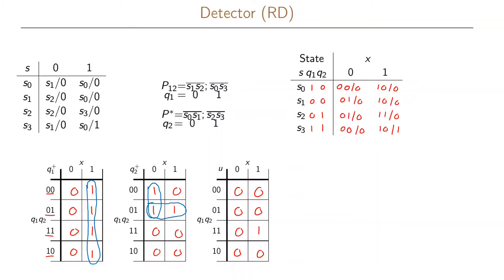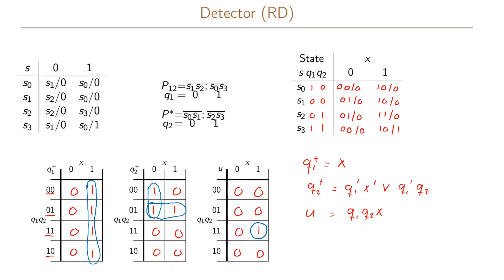For the output function there is only one 1 in the Karnaugh map so we have one prime implicant. We can now write our minimal functions as: q1+ = x, q2+ = q1' x' or q1' q2, and the output function u = q1 q2 x. Counting the total number of implicants in our minimal functions, we have four implicants in total.